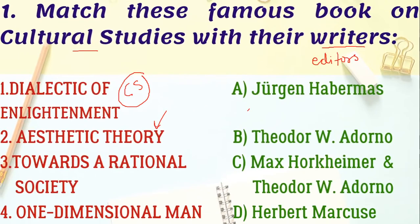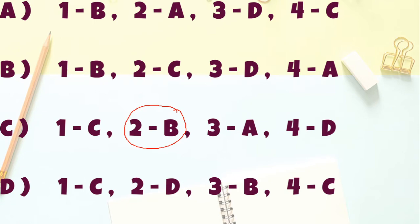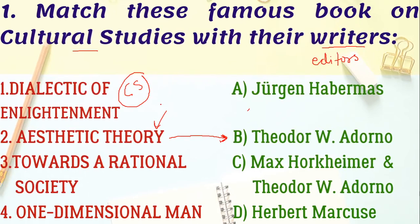Aesthetic Theory is a very popular book, and its writer is Adorno. Using that as a key, we can narrow down the options to the one where second is matched with Adorno — which gives us option C. Working through the rest: Dialectic of Enlightenment is edited by both Horkheimer and Adorno, Towards a Rational Society is by Habermas, and One Dimensional Man is by Herbert Marcuse.